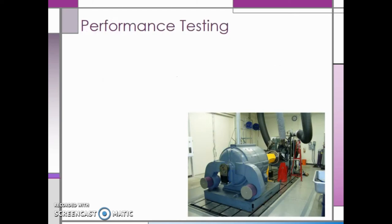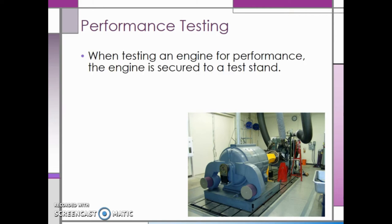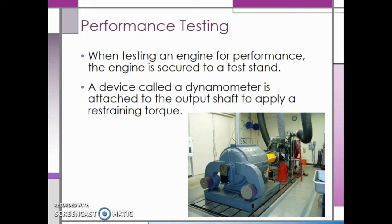Before we can begin discussing how we can create a torque or power curve, we need to talk a little bit about performance testing. When an engine is being tested for performance, it is secured to a test stand. A device called a dynamometer is attached to the output shaft of the engine. This dynamometer applies a restraining torque to the engine.